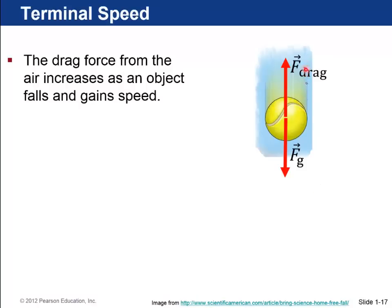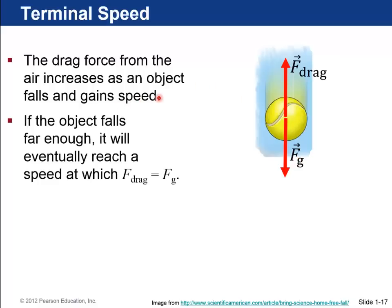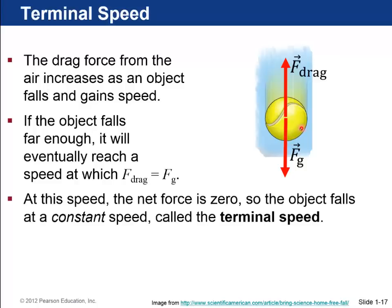So, if you just have a falling object, as the object falls faster and faster, the upward drag force gets bigger and bigger until, if it falls far enough, it'll eventually reach a speed at which this drag force from the air is equal to and in opposite direction to the weight or the gravity force down. And, at that point, the net force is zero, so the object is falling at a constant speed. We call that the terminal speed.